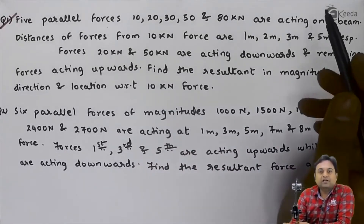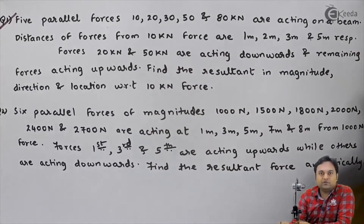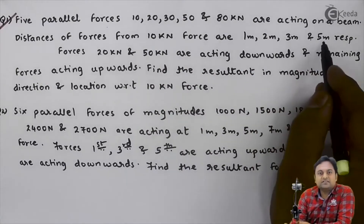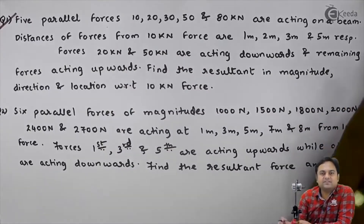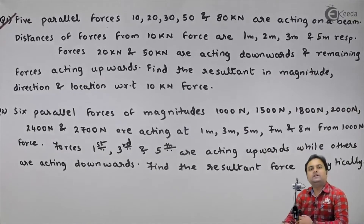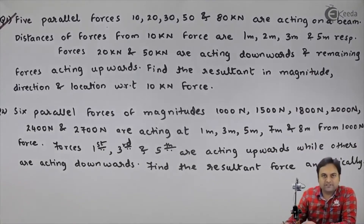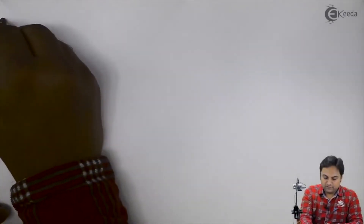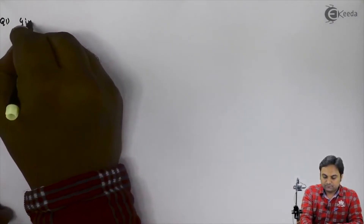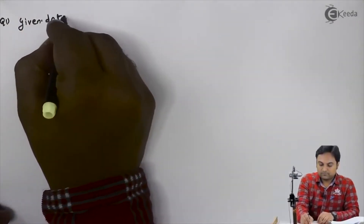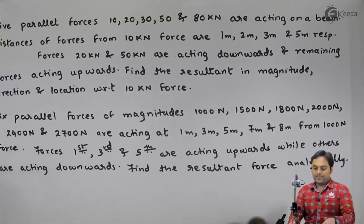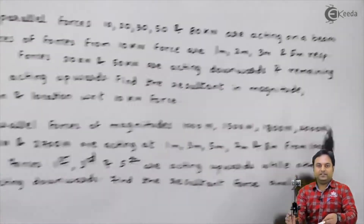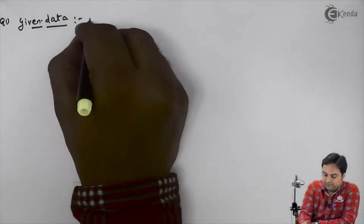In this question we have 5 parallel forces and their distances are given with respect to the 10 kN force. The diagram is not provided but hints are given with which we can draw the diagram. We have 5 forces: 10, 20, 30, 50 and 80 kN.